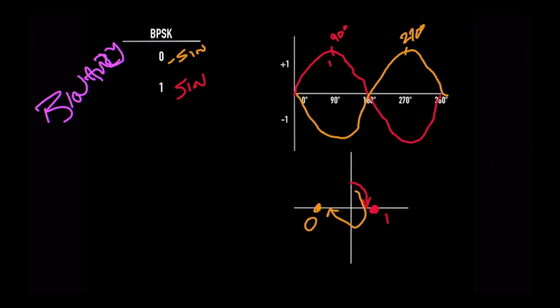This is a very simple modulation scheme. It uses a sine wave or an upside down or minus sine wave to represent either a 1 or a 0.